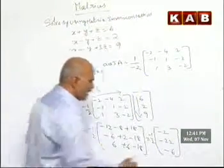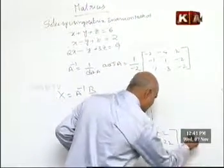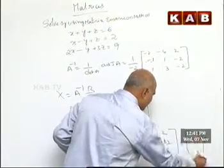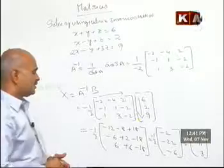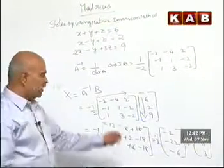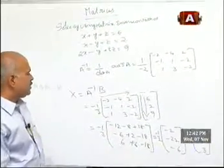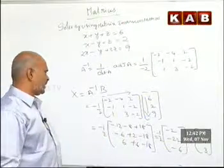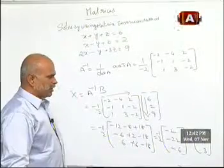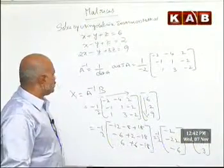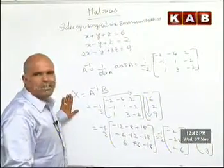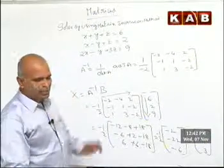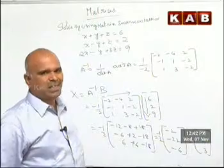We may get it as like this — dividing that part: 1, 11, 3. These are the values. 1, 11, 3. This will be the value of our required matrix inversion method. X will be 1, 11, 3. So we can calculate these values as like this: 1, 11, 3. So this is about the matrix inversion method.